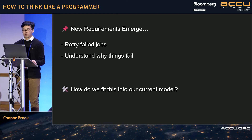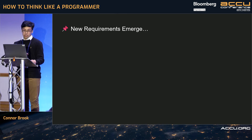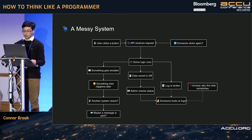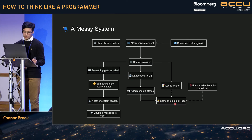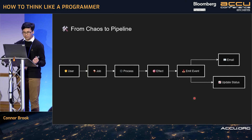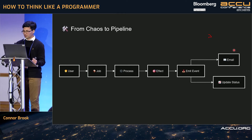How do we actually fit retry logic into our current model? Looking at our existing system, the API receives requests, some logic occurs, data is saved, and someone looks at logs. We could decide to use those logs to trigger a whole new request to go through again — maybe some kind of retry that loops back to the start. It's a bit sketchy.